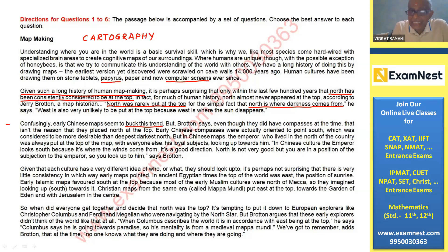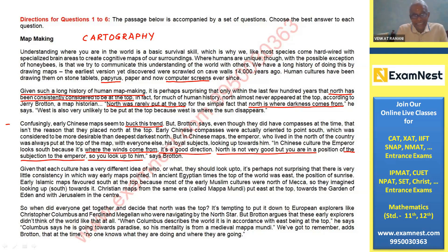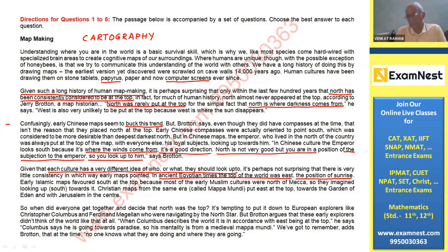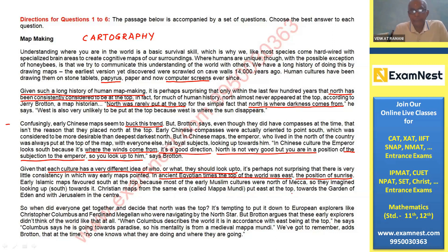In Chinese culture, the emperor looks south because that is where the winds come from. Given that each culture has a very different idea of what they should look up to, it's perhaps not surprising there is very little consistency in which way early maps pointed. The ancient Egyptians placed east at the top — the position of sunrise — a natural phenomenon. Islamic maps favored south at the top because early Muslim cultures were north of Mecca. Christian maps put east at the top, toward the Garden of Eden, with Jerusalem in the center.